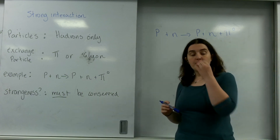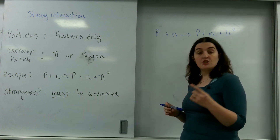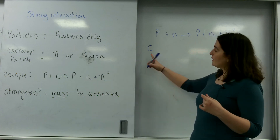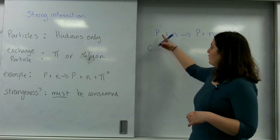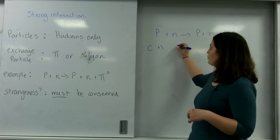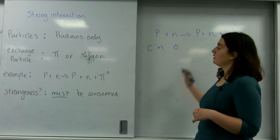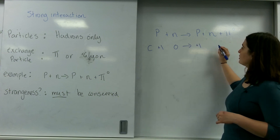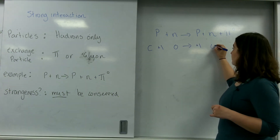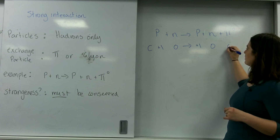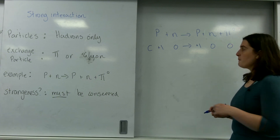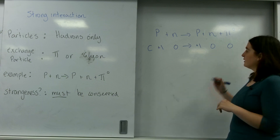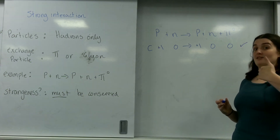One of the first things that must be conserved in the universe is charge. A proton has plus one charge, neutrons have zero charge. On the right-hand side: proton has plus one charge, neutron has zero charge, and the pion also has zero charge. I have plus one on this side and plus one on this side — it's conserved.